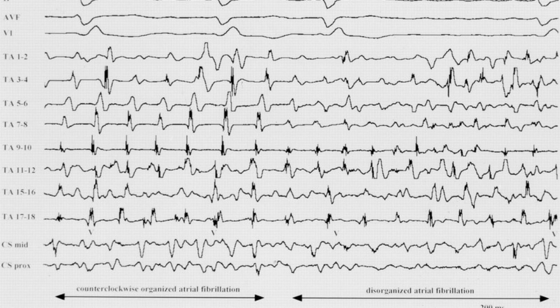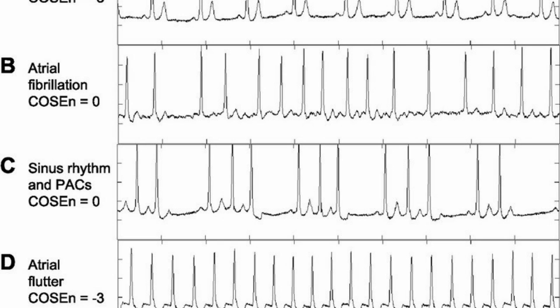Nerves and hormones control heart rate. Parasympathetic nerve impulses coming along the vagus nerve slow the heart rate down. Adrenaline and noradrenaline increase the heart rate. Dopamine increases the heart rate as well as the force of contraction.